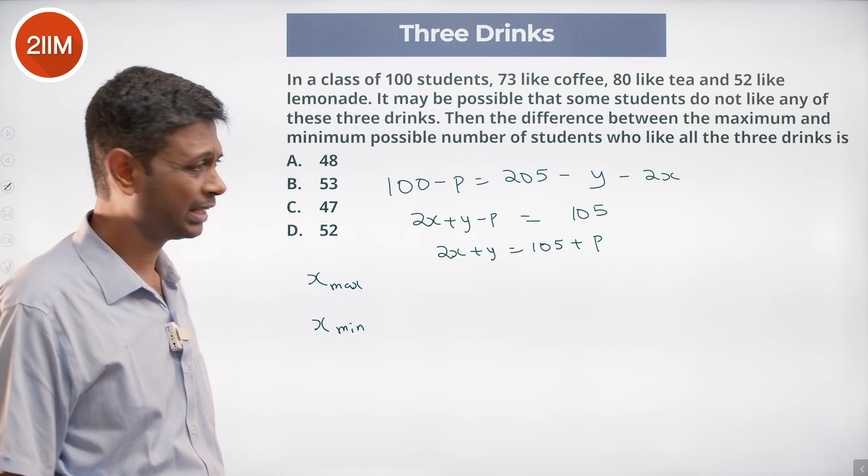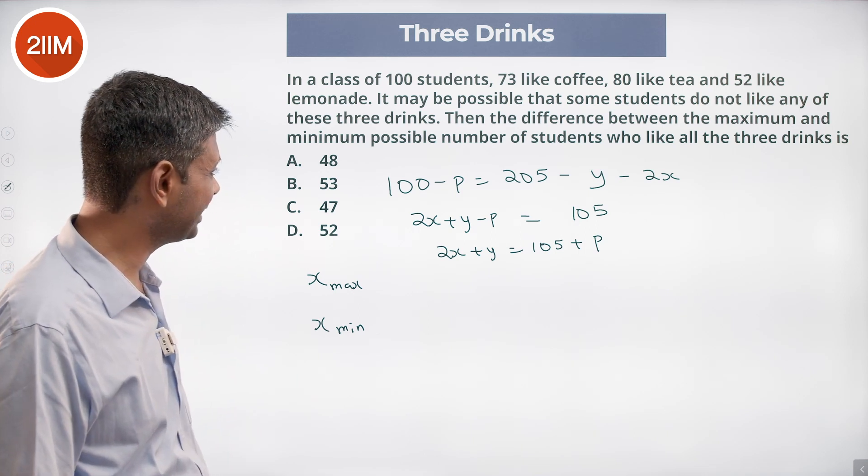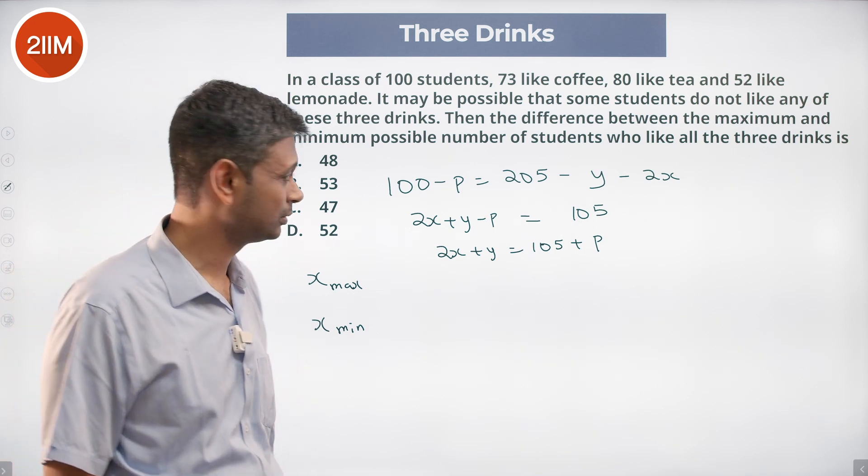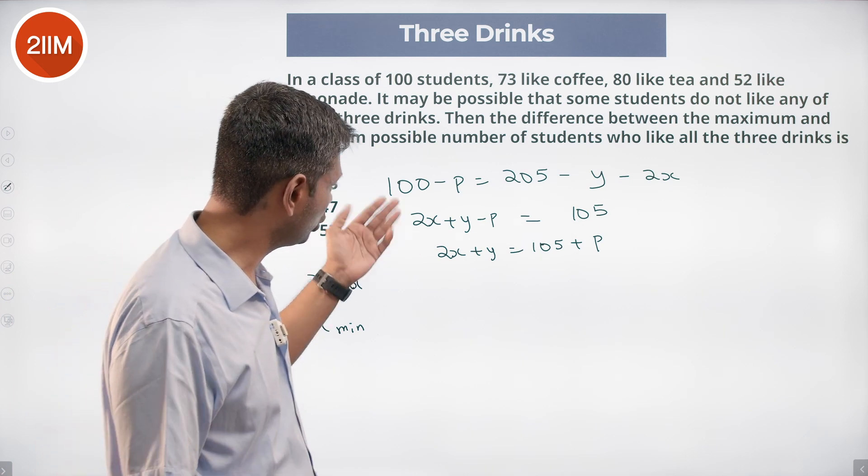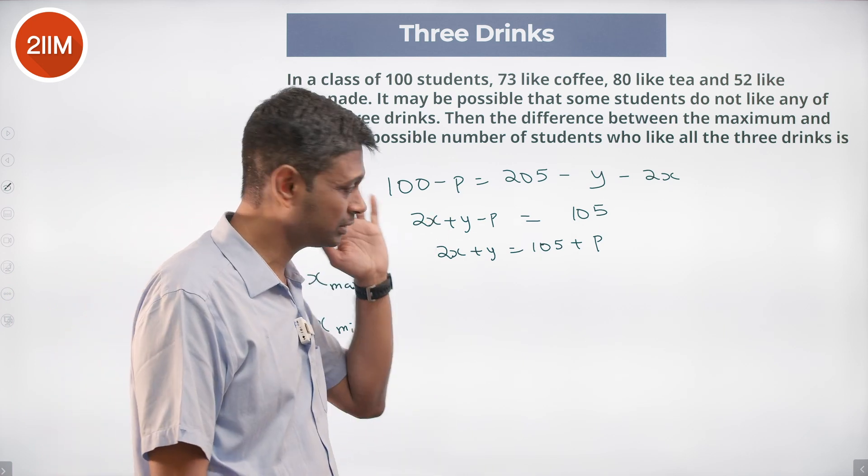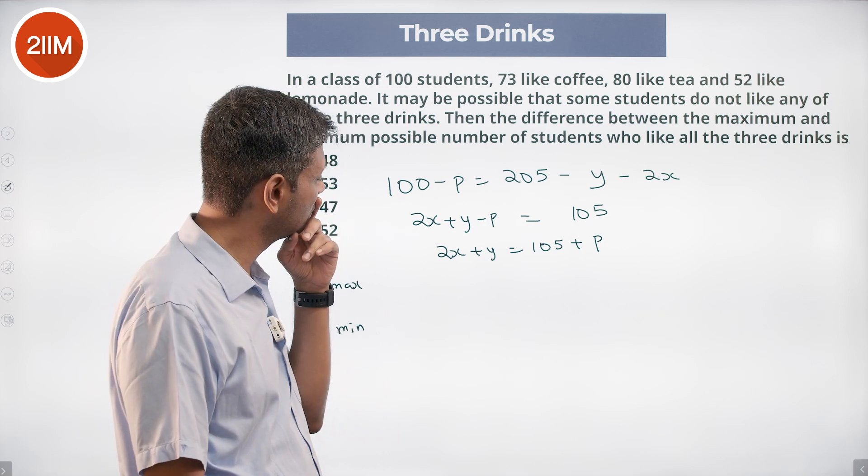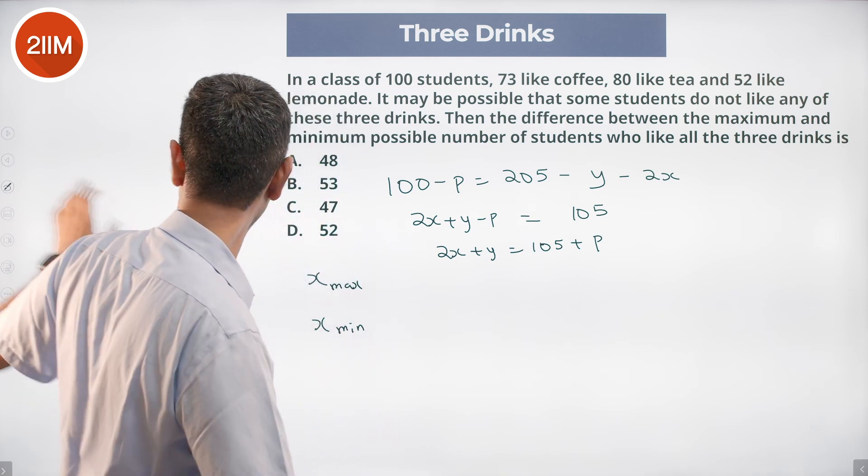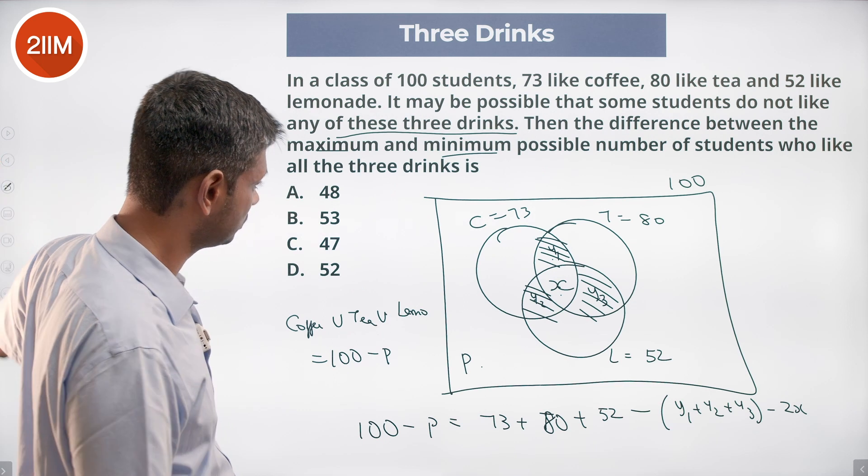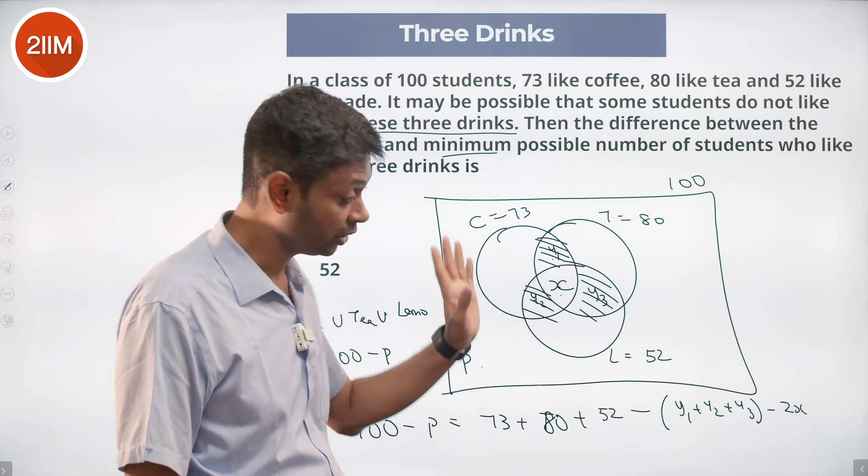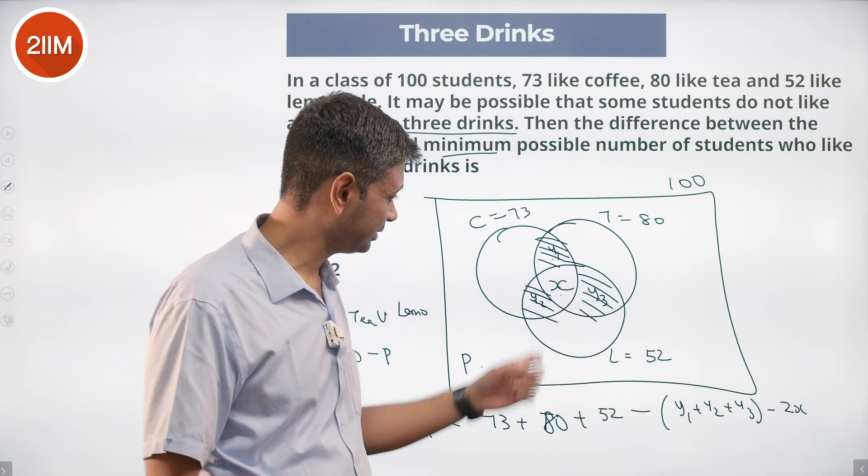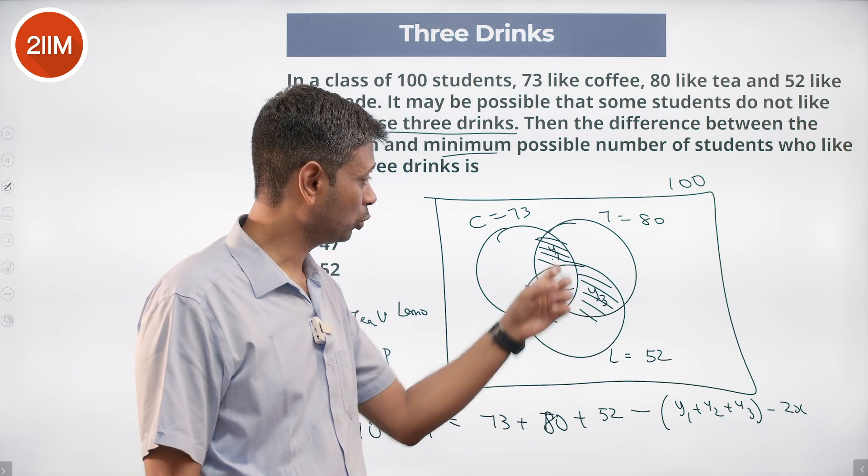Can the maximum value of x be? Can we put x as 52? So 52 into 2 is 104 plus y is 105, p is 0. Can x be 52? You put x as 52 here, y is 1. These two cannot be 1, but I can put 1 here.